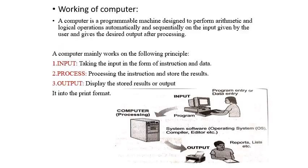Now let's see how a computer works — the working of a computer system. A computer system is a programmable machine because we can create new programs in it, and according to what task we want to carry out, we can do programming accordingly. A computer is a programmable machine designed to perform arithmetic and logical operations. These operations take place in an automatic as well as sequential manner.